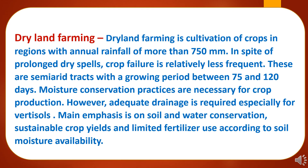Dryland farming is cultivation of crops in regions with annual rainfall of more than 750 mm. In spite of prolonged dry spells, crop failure is relatively less frequent. These are semi-arid tracts with a growing period between 75 to 120 days. Moisture conservation practices are necessary for crop production; however, adequate drainage is required especially for Vertisols. Main emphasis is on soil and water conservation, sustainable crop yields, and limited fertilizer use according to soil moisture availability.